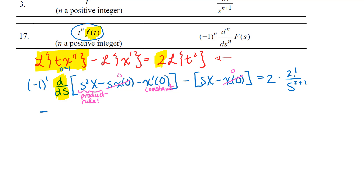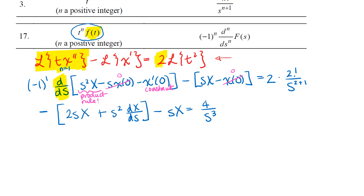When I take the derivative with respect to s of the constant term, that part will just be 0. Going ahead and taking that derivative using the product rule, I will have 2s times x, plus s squared times the derivative of x with respect to s. I'm going to use the d/ds notation here — you can write x prime if you want, but be clear that it's capital X prime and not lowercase x prime. I'll distribute the minus sign through and combine the like terms: I have a minus 2sx and a minus sx, so I'll combine those.